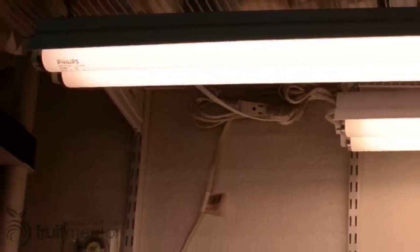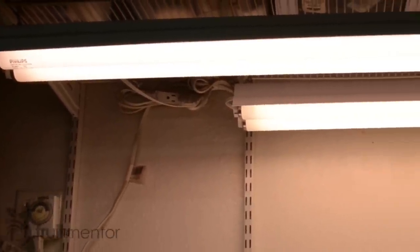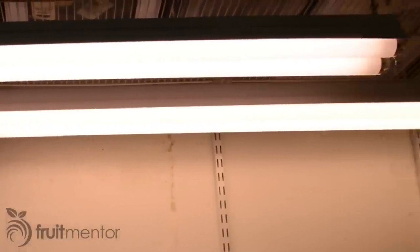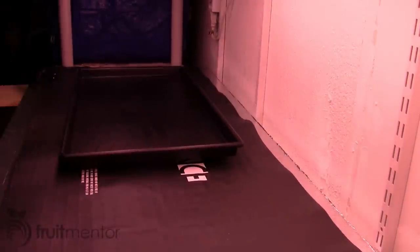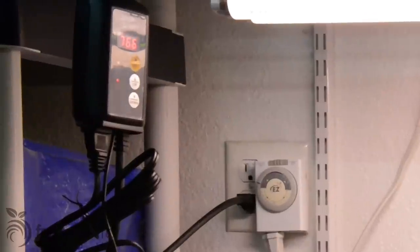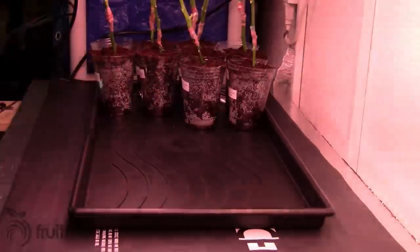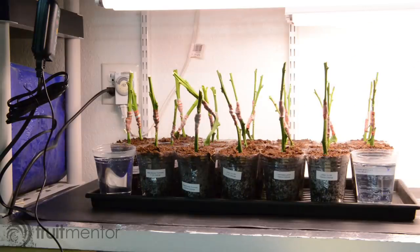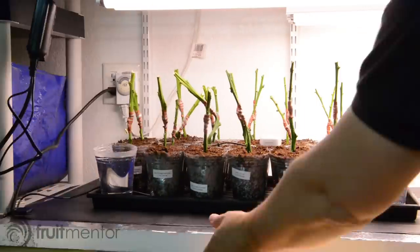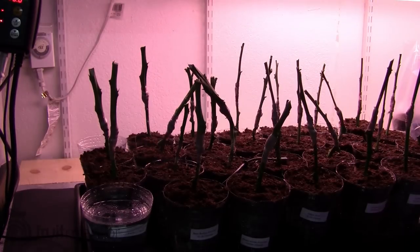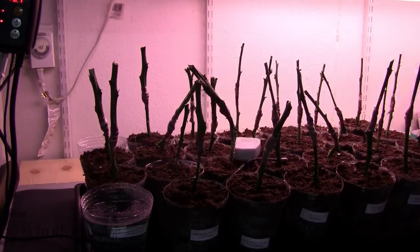At first, I started out with these T12 fluorescent lights. I set up my heating pad, tray, and thermostat. Then I added the plants, misted them, placed the temperature probe, and added my cover to maintain a humid environment. I found that it was adequate to water and mist the plants every one or two days.